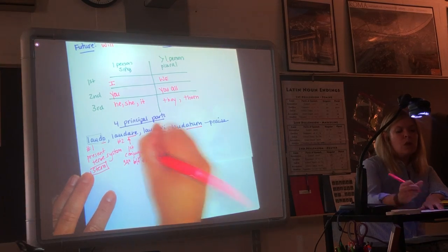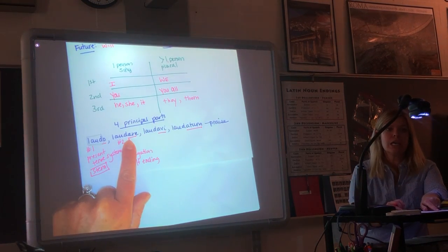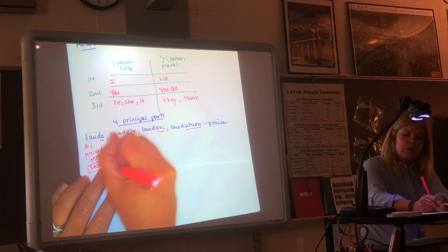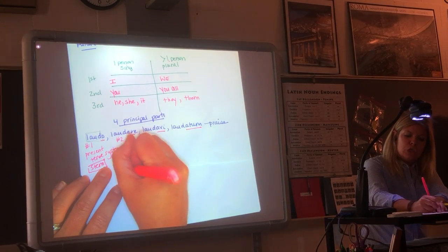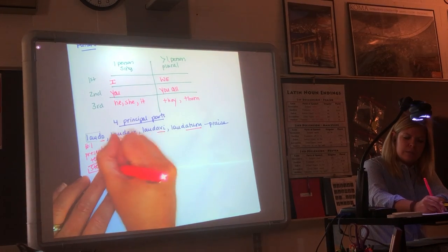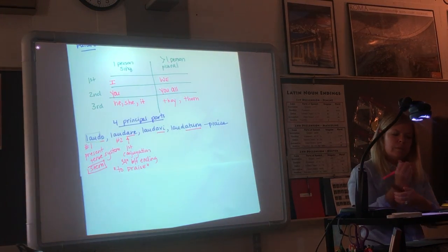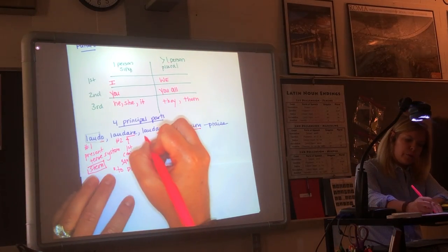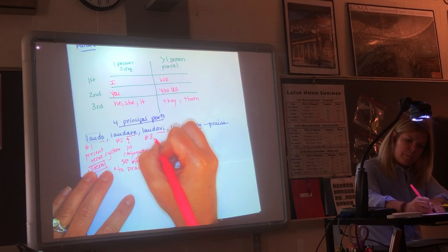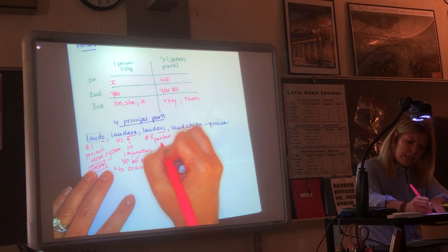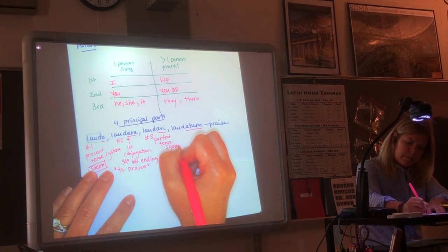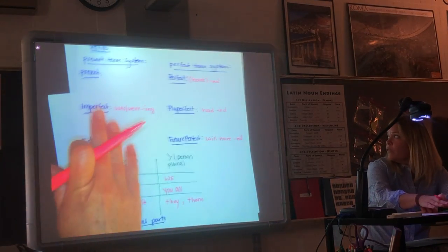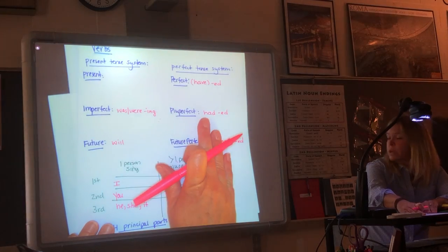In Latin 2, we're going to see verbs that end in an -ere, and you're going to put E's before your ending. Remember that the second principal part always translates as to, to praise. It doesn't have a subject. It's not conjugated.